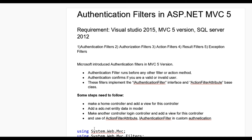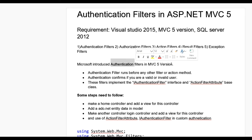Hello, today we learn custom authentication filters in ASP.NET MVC5. We have a requirement for Visual Studio with MVC5 version and SQL Server 2.12. There are five filter types: authentication filters, authorization filters, action filters, error filters, and result filters. Microsoft introduced authentication filters in MVC5 — they run before any other filters.